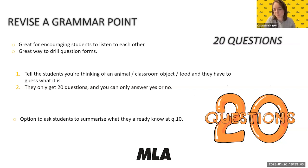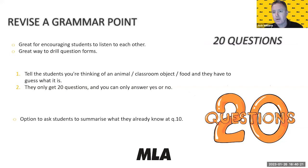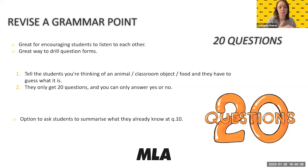I sometimes forbid students from naming the object until question 15, which keeps them asking more descriptive questions — harder questions to form, which is the whole point. You could also switch it round so one student thinks of the object and answers questions from the class. Or put students into groups and monitor how well they're forming questions, giving you an idea of what question forms need further study.